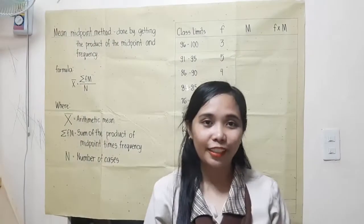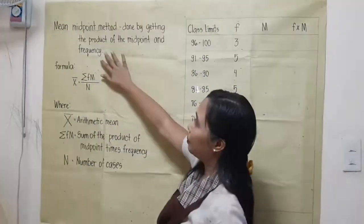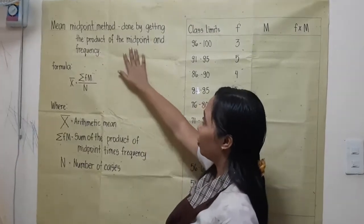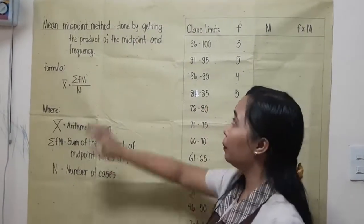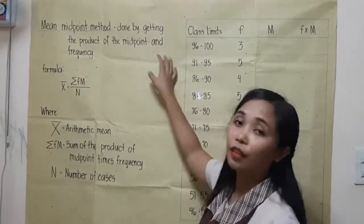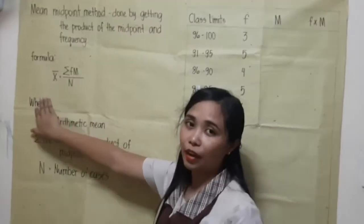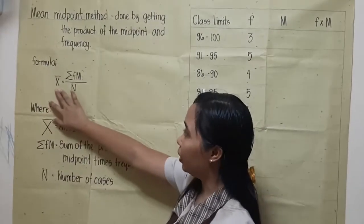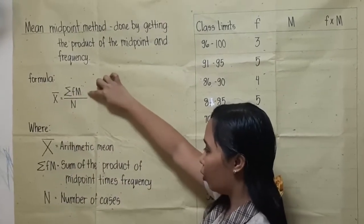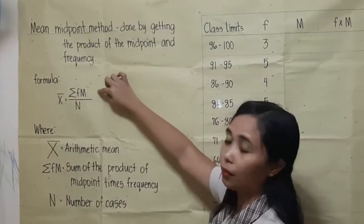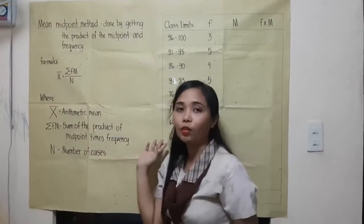Let's tackle first the midpoint method. The midpoint method is done by getting the product of the midpoint and the frequency. The formula is as follows: the arithmetic mean equals the sum of the product of midpoint times frequency over the number of cases.